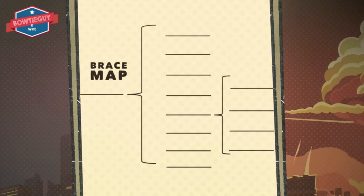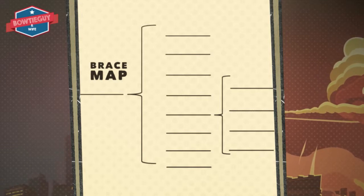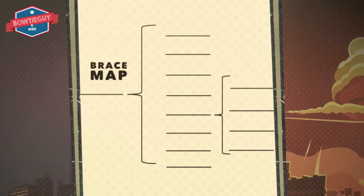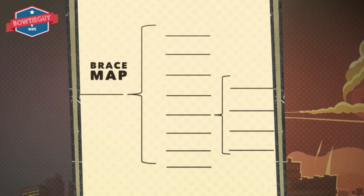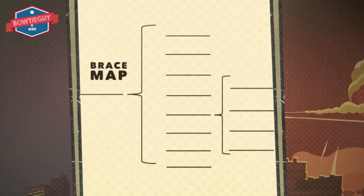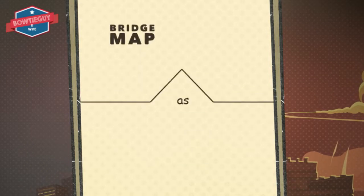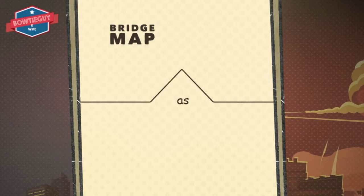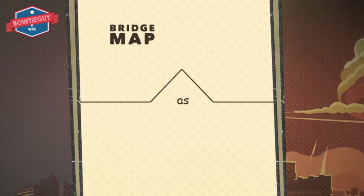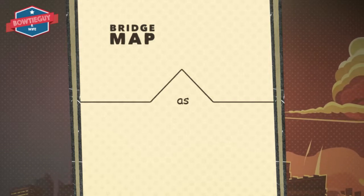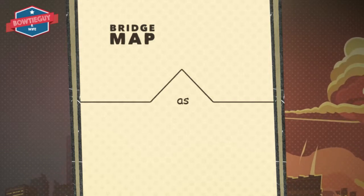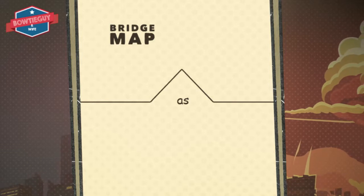So if you were going to describe what you're having for lunch — say you're having a sandwich — you can talk about the sandwich as your main topic and then talk about all of the parts of the sandwich in the subsequent blanks. A bridge map is a wonderful opportunity to demonstrate non-linguistic representations of word relationships. Bridge maps illustrate analogies.